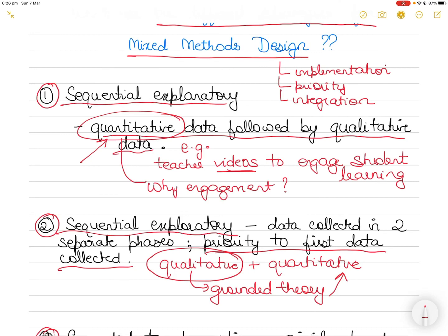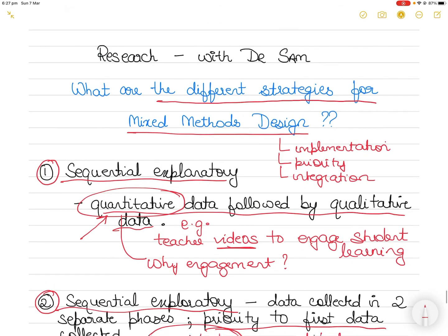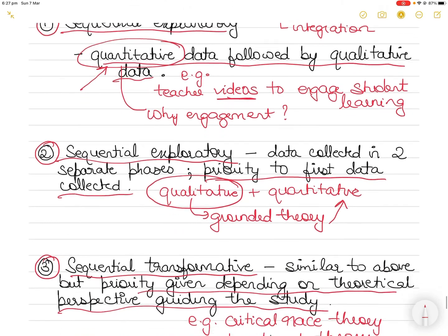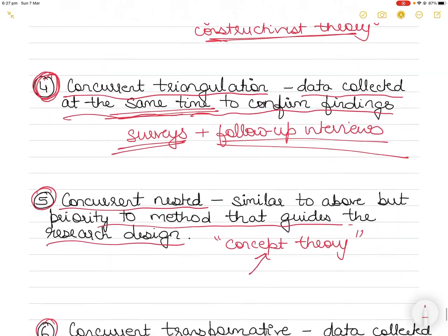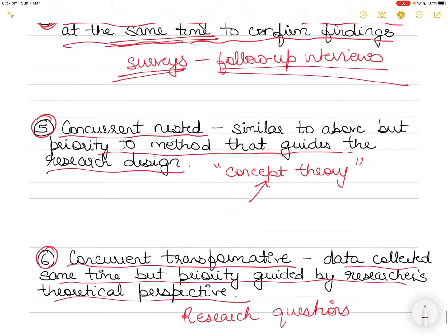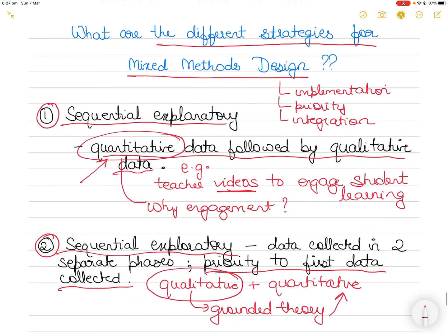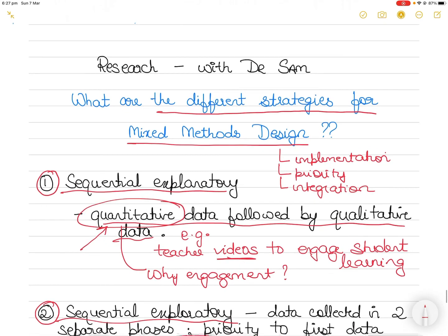There are many mixed method strategies, and most are relatively new. You have to choose the right strategy based on what is relevant for your type of research — whether it centers on theory, data, confirming findings, or research design. Let me know what you thought about this video, and I will keep making more videos on topics like this to help you understand what strategies you can use for data collection and analysis in your research.